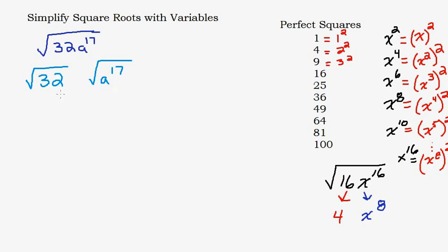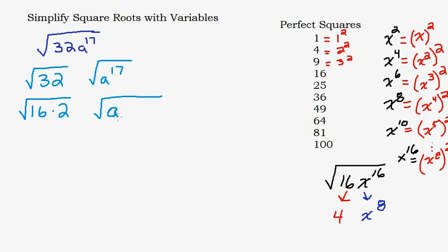Let's deal with the square root of 32 first. Looking at the list, 32 is not in it, so I ask: is 32 divisible by any perfect square on the list? Yes — 16 goes into 32, so I split 32 into 16 times 2. For a to the seventeenth, I need to split it into a perfect square times a remainder. Since all even exponents are perfect squares, the next even number down is 16, so a to the seventeenth becomes a to the sixteenth times a to the first.